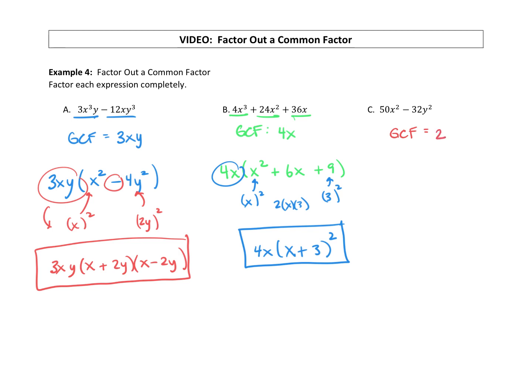Do both terms have x's? Do both terms have y's? They do not. So our greatest common factor is just a 2. So we're going to factor that out. Factor a 2 out of 50x squared leaves you with 25x squared minus. Factor a 2 out of 32y squared leaves you with 16y squared. All right, so we took out a GCF.